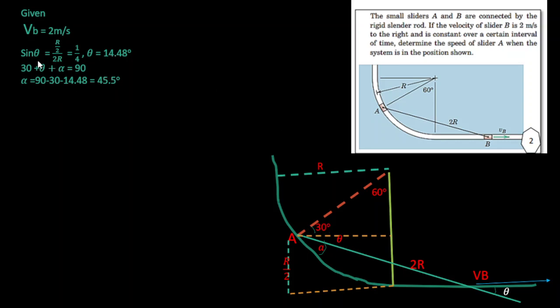We get theta here, 14.48, and from this we get alpha. Alpha is 45.5 degrees.